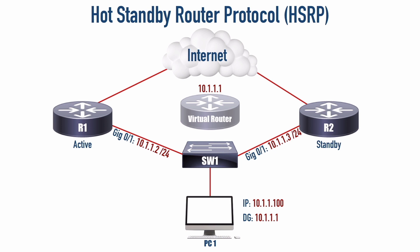If you're wondering how R2 knows that R1 is no longer available, R1 is going to periodically send hello messages over to R2. By default, it's going to send a hello message every three seconds. And if R2 hasn't heard from R1 within what's called the hold time, which defaults to 10 seconds, R2 assumes that R1 is no longer available and R2 is going to take over. The hold time must be at least three times the hello time.